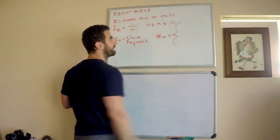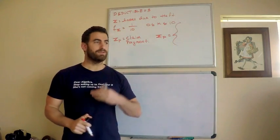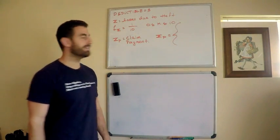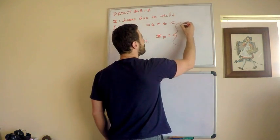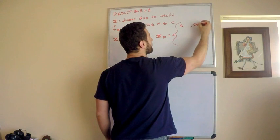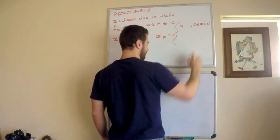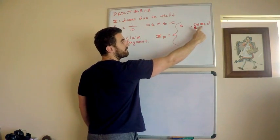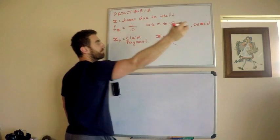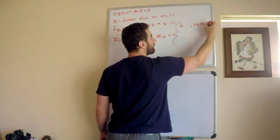What is the formulation of the claim payment? I can write it as, if I'm an insurance company and you get something stolen, I pay you zero dollars, if what? If your losses are less than deductible. If I pay you zero for zero less than x less than d, your losses are less than the deductible. And the deductible's three, so I get in the habit of just putting d. There we are.